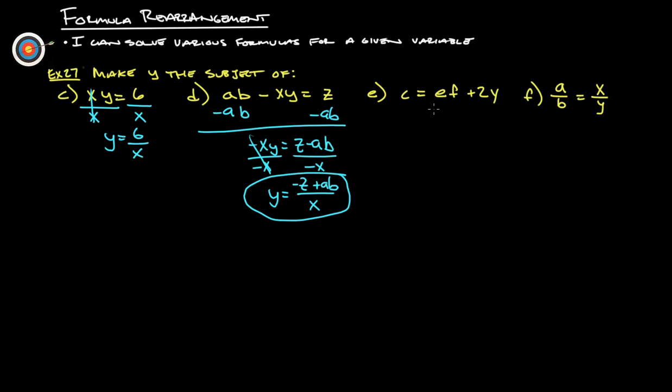Solve for y. So we've got to get rid of the ef. Subtract ef. So that's gone. And we have c minus ef equals 2y. And then last step, divide everything by 2. So we could just leave this as c minus ef over 2. That would be just fine. It's probably easier that way. You could put c over 2 minus ef over 2, but this is probably simpler there.